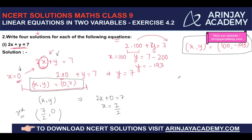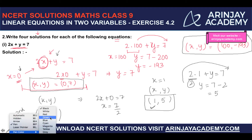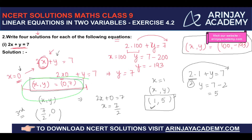For the fourth solution, let x equal to 1. Substituting: 2 into 1 plus y equals 7, so y equals 7 minus 2, which is 5. Therefore (1, 5) is another solution. In total, we now have four solutions for the equation 2x plus y equals 7: (0,7), (100,−193), (7/2, 0), and (1, 5).